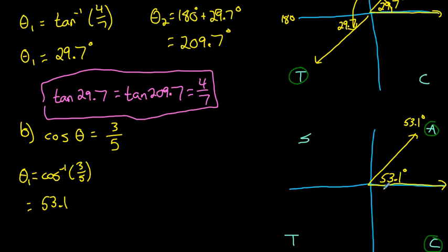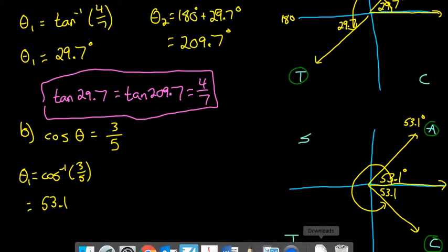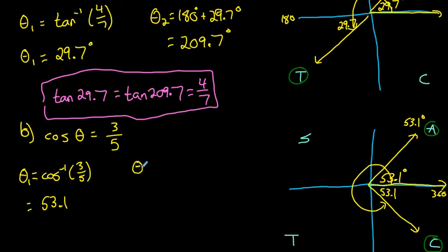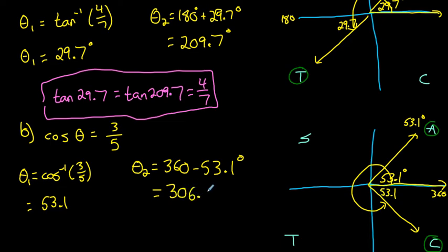We plot that reference angle in the other quadrant where cosine is positive — the fourth quadrant. The reference angle must be the same: 53.1 degrees. We figure out how far we rotated from the initial arm to reach that terminal arm. We fell 53.1 degrees short of a full 360-degree rotation, so the second angle is 360 − 53.1 = 306.9 degrees.